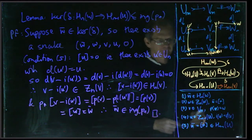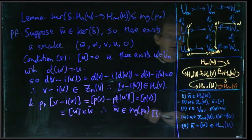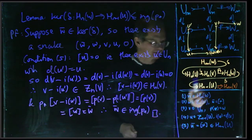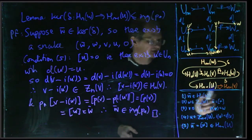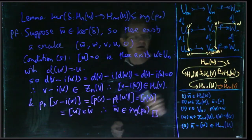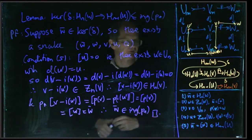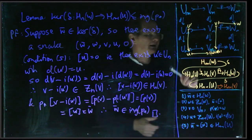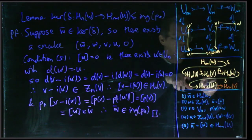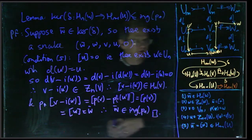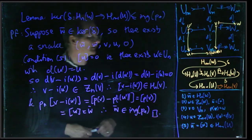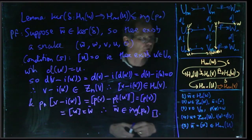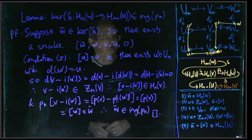Putting the last few lemmas together, we've now shown that every point in this sequence is exact — the image of every map is the same as the kernel of the next one. So we've got an exact sequence. We've shown five terms of it, and you can string them all together to get an infinitely long exact sequence relating the homology of U, V, and W. And that's our snake lemma.